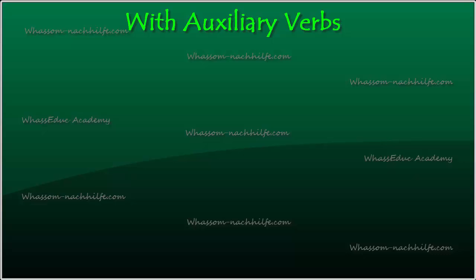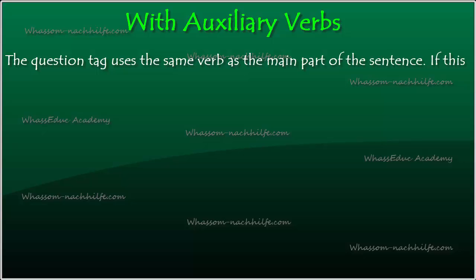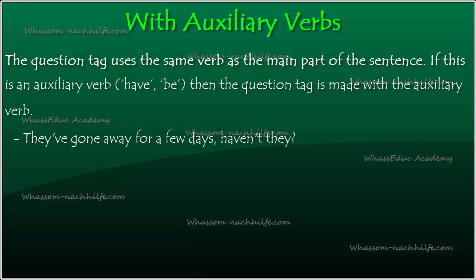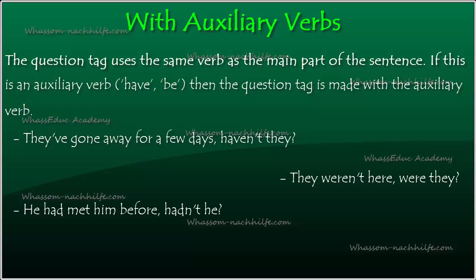In the second part, we're going to see how to use question tags with auxiliary verbs. The question tag uses the same verb as the main part of the sentence. If there is an auxiliary verb — 'have' or 'be' — the question tag is made with that auxiliary verb. For example: 'They've gone away for a few days, haven't they?', 'They weren't here, were they?', 'He had met him before, hadn't he?', and 'This isn't working, is it?'